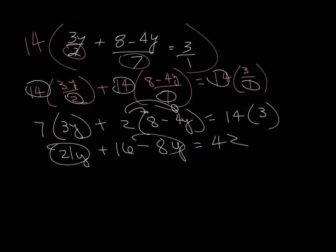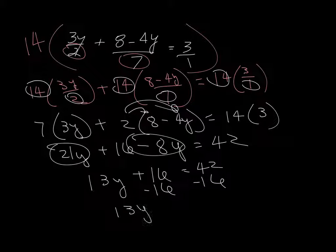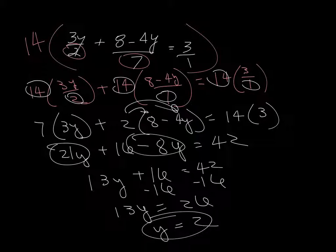Alright, so we combine these. 21 minus 8 is going to be 13y, subtract 16, and we get 13y equals 42, 22, 26. So y equals 2. Alright, so the key thing is, getting rid of those doggone fractions makes life so much easier when you do these.